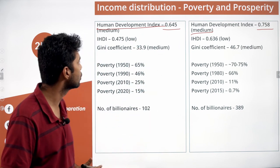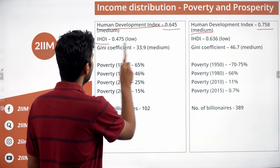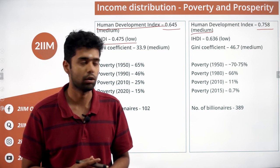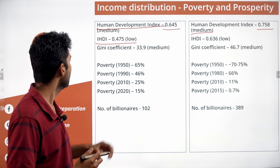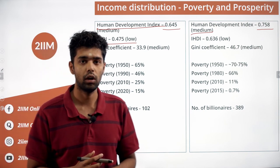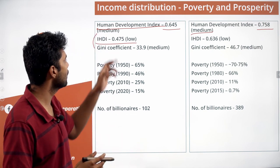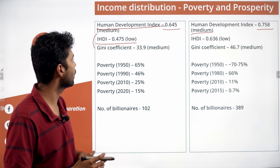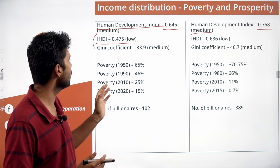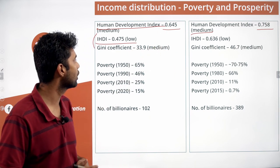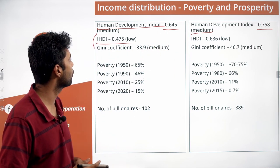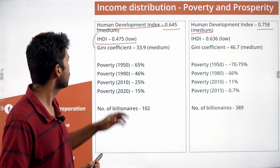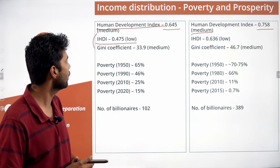There is also the IHDI — Inequality Adjusted Human Development Index — which adds inequality as a fourth dimension. When adjusted for inequality, India's HDI drops drastically from 0.645 to 0.475. For China, it reduces from 0.758 to 0.636. So if we adjust for inequality, both India and China actually fare very poorly in the Human Development Index.